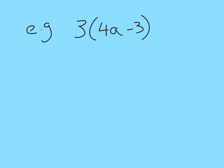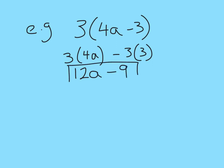Let's take another example. So here we have 3 multiplied by 4a minus 3. So let's start. You can split it up, or you can use the loop method. I'm going to just split it up for now. 3 by 4a minus 3 by 3. So 3 by 4a gives me 12a, and minus 3 by 3 gives me minus 9. And that's my answer.